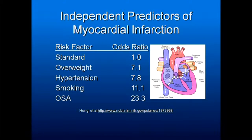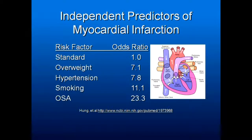This is the stuff you need to tell your patients. Standard risk factors for heart attack: being overweight increases it by seven times, high blood pressure increases it by eight times, smoking increases it by eleven times, obstructive sleep apnea increases the risk of heart attack by twenty-three times. When you can get your patient treated and decrease their possibility of a heart attack by that greater factor, that's an incredible gift.